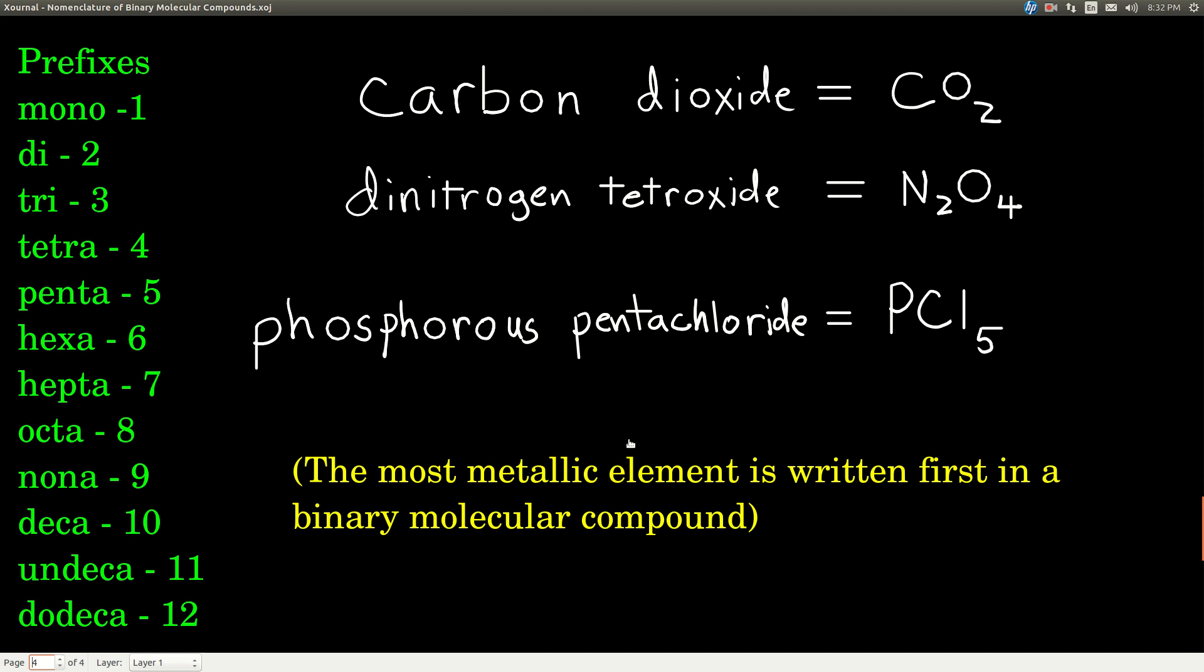Remember, in the periodic table, the trend is that elements become less metallic as you go up and to the right, and so the element that's the furthest down and to the left will be the first one, and the one that's the most up and to the right in the periodic table will be the second one. So that's it. Thank you.